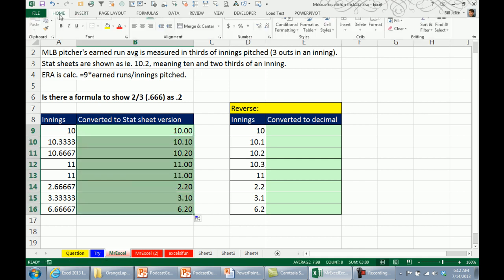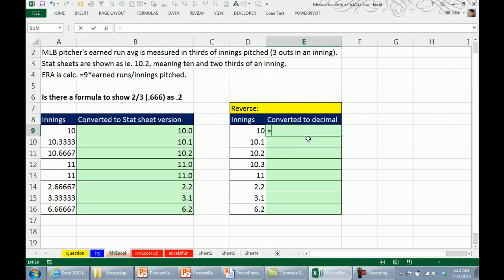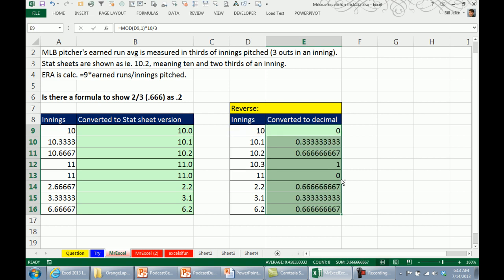At this point we have one too many decimals, so we'll go back, decrease decimal, so there's the answer without using DOLLARFR or DOLLARDE. If you want to go back the other way, same thing, we'll take the MOD of this comma 1, which gives us the fraction, the part that goes after the decimal place, let's multiply that whole thing times 10 and then divide by 3, which will get us the 0.1, 0.2, 0.3 converted back to a fraction, and then finally just the integer of the original value, and it converts it back.